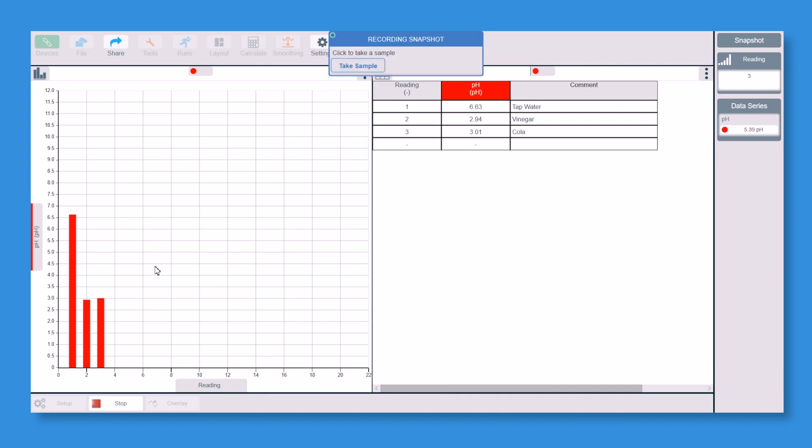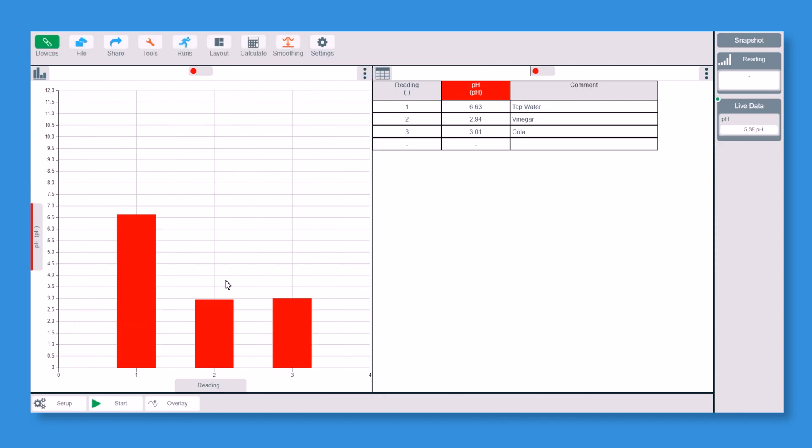So we now have the three readings, the three bar charts. If I click stop now, it now auto scales and fills the screen with the bar charts as well. Now of course you can have lots of other ones. You can have some more tap water with vinegar in it, with lemon juice, whatever you wanted around the house.